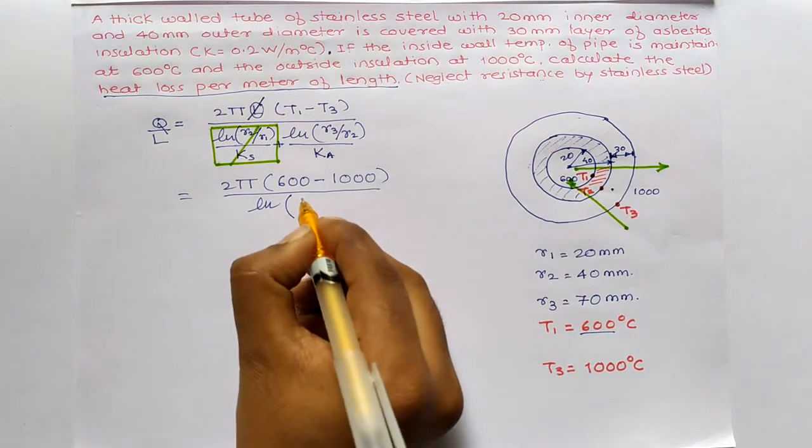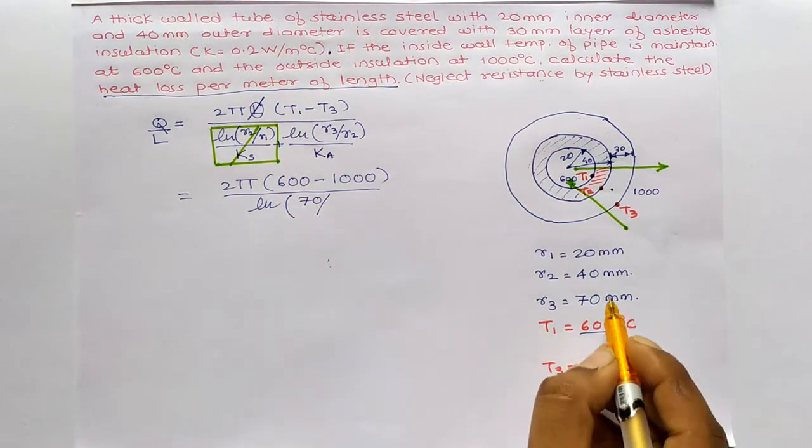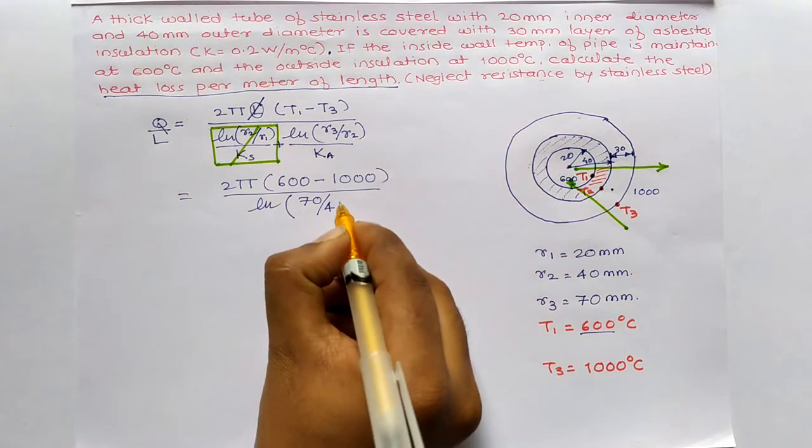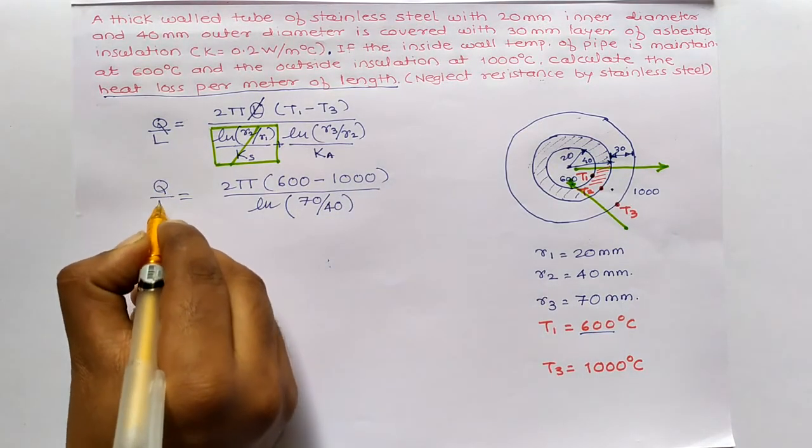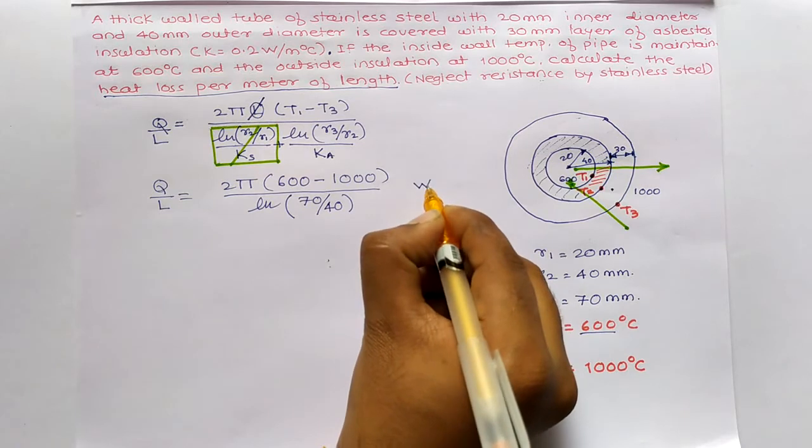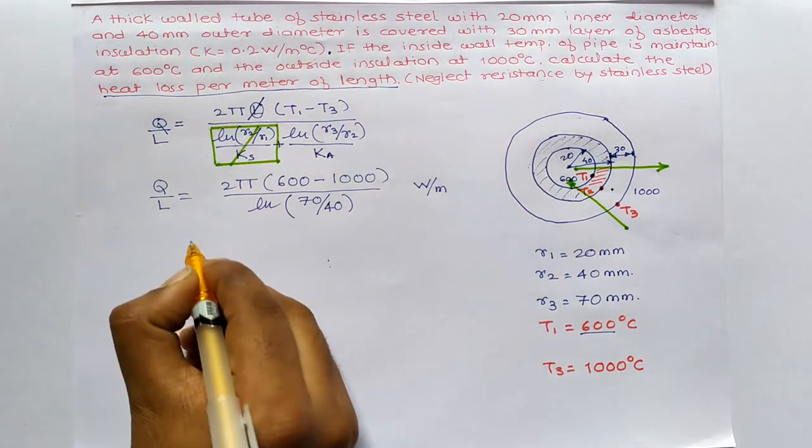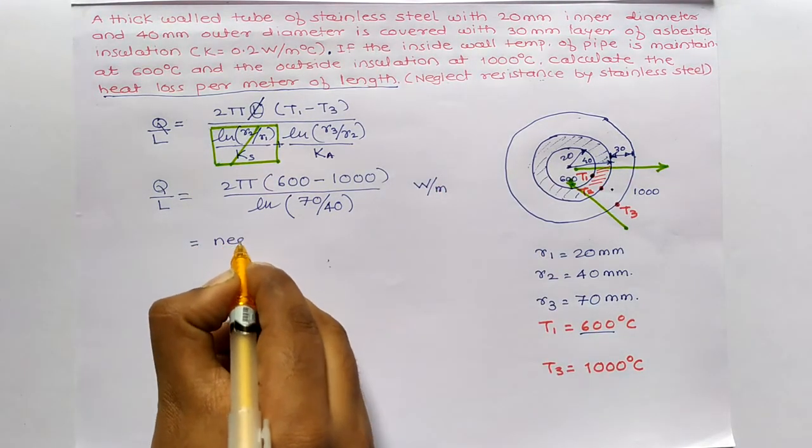ln of R3, which is 70mm, divided by R2, which is 40mm. And here it is, Q by L. Your answer should be in Watt per meter and your answer is negative.